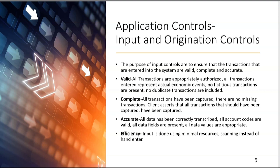Completeness is the opposite — the concern is understatement. The entity wants to make sure that all transactions have been captured with no missing transactions. The client asserts that all transactions that should have been captured have been captured. Accuracy means that all data has been correctly transcribed, all account codes are valid, all data fields are present, and all data values are appropriate. Efficiency applies when input is done using minimal resources, like scanning instead of hand-entering data.